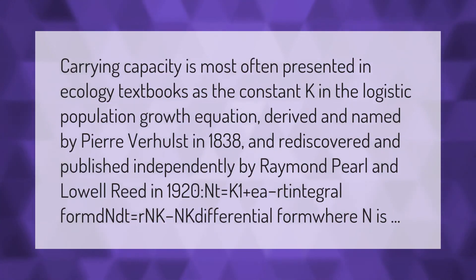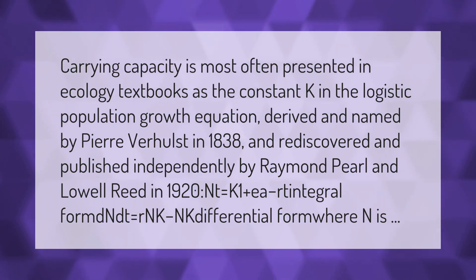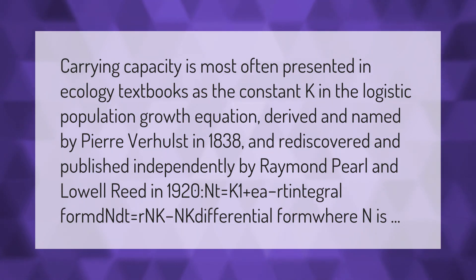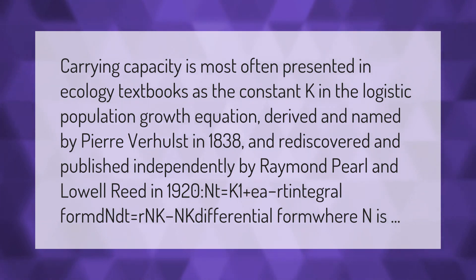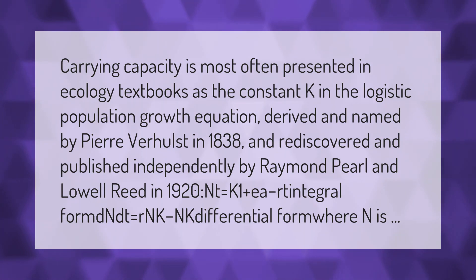Carrying capacity is most often presented in ecology textbooks as the constant K in the logistic population growth equation, derived and named by Pierre Verhulst in 1838, and rediscovered and published independently by Raymond Pearl and Lowell Reed in 1920. The integral form is: N(t) = K / (1 + a·e^(−rt)), and the differential form is: dN/dt = rN·(K − N)/K, where N is population size.